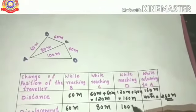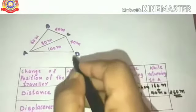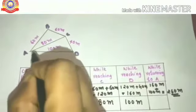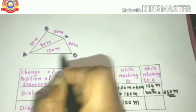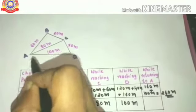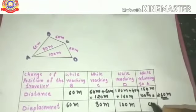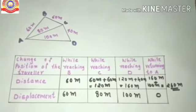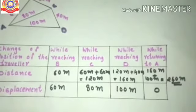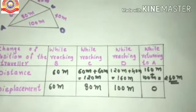When the object returns to A, the initial and final position are both A. From A to D is 100 metres and from D back to A is also 100 metres, but since the initial and final positions are the same, the displacement is 0. If the initial point and final point are the same, the displacement will always be 0.